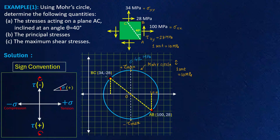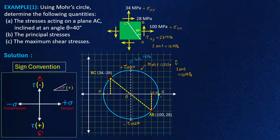If you draw this graph properly with correct scales, you will get very accurate values with the help of Mohr's circle. Here I have not drawn a very accurate graph, so I am getting approximately 42 MPa as maximum shear stress. Now we need to find the principal stresses. We know that principal stresses correspond to the plane where there is no shear stress. Let me call this point E and this point F — corresponding to points E and F, there is no shear stress, only normal stresses.